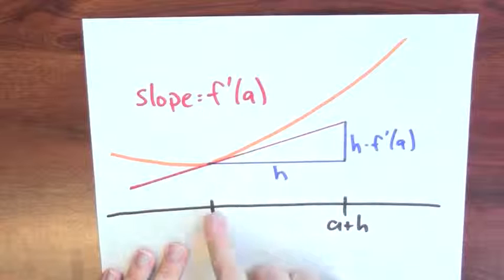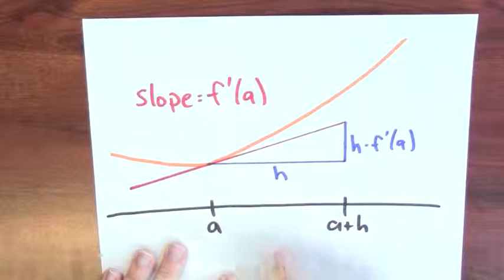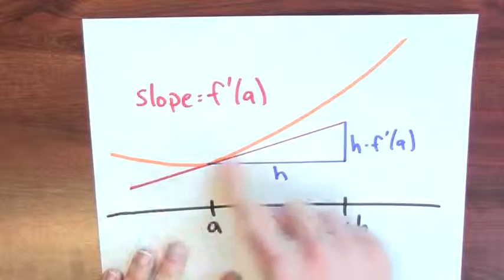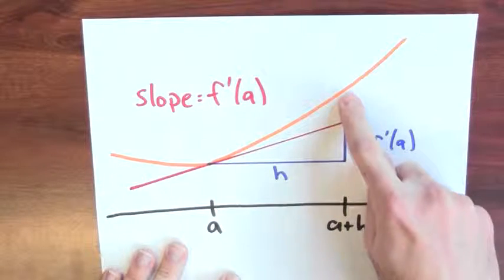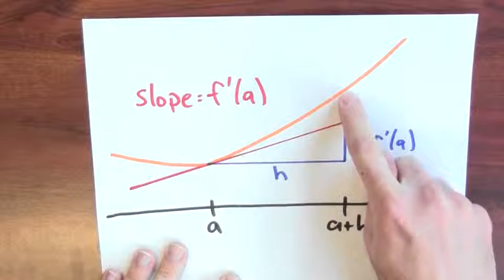Now, this is giving me some information about how wiggling the input would affect the output. If I move from a to a plus h, well, on the tangent line, I'm moving up to this point, which isn't so far off of the real value of the function up here.